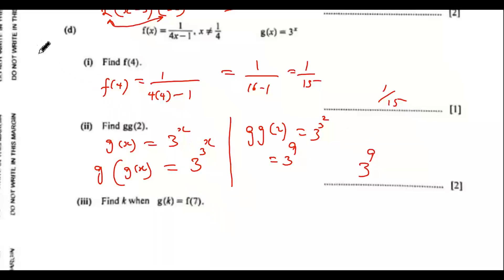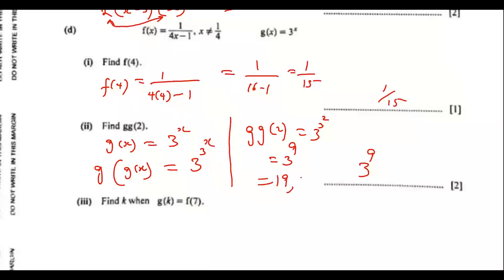If you want to write out 3 to the power of 9, that would be 3 as a factor repeated 9 times: 3 times 3 times 3 and so on, 9 times. That would be 19,683. So 3 to the power of 9 is equivalent to 19,683.